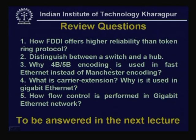Here are the review questions: How does FDDI offer higher reliability than the token ring protocol? Distinguish between a switch and a hub. Why is 4B/5B encoding used in fast Ethernet instead of Manchester encoding? What is carrier extension and why is it used in gigabit Ethernet? How is flow control performed in gigabit Ethernet?